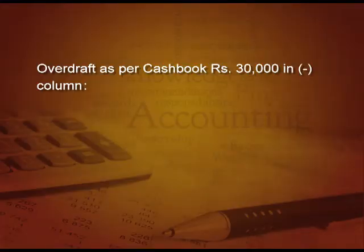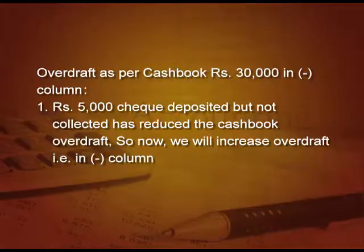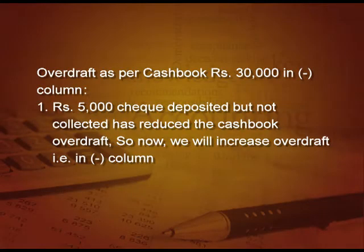Let us begin the solution. First line: write bank reconciliation statement, and then overdraft as per cash book 30,000 in the minus column. Remember — minus column for overdraft. Point number 1: 5,000 rupees check deposited but not collected has reduced the cash book overdraft, because when you deposit the money it will reduce the overdraft in cash book. Now we have to increase the overdraft — that is, write in the minus column.